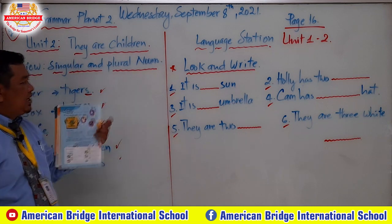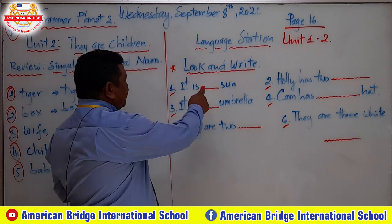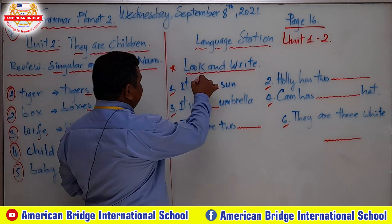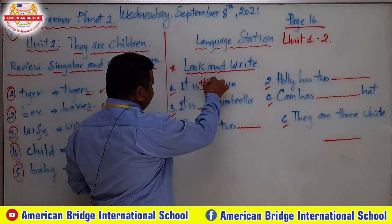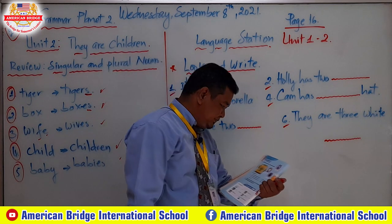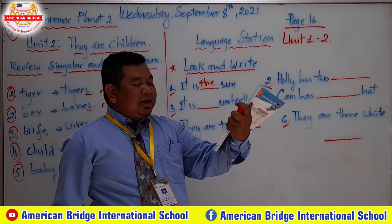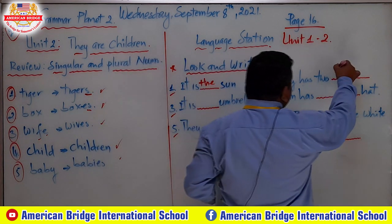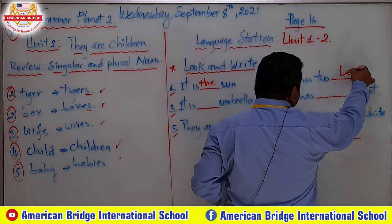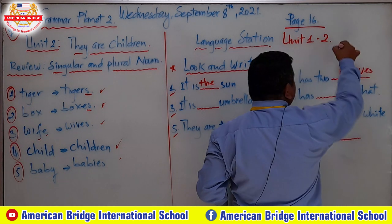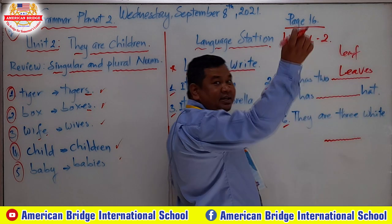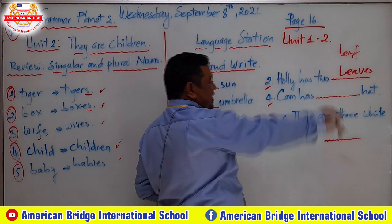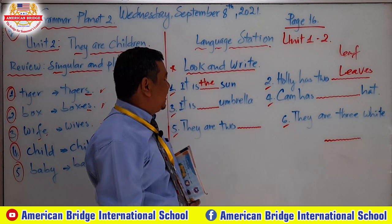Let's practice the exercise together. Number one: 'It is ___ sun.' The sun is only one thing, so you use 'the.' Answer: 'It is the sun.' Number two: 'Holly has ___.' Look at the picture — it shows leaves. The word is 'leaf,' and since it ends in -F, you delete it and add -VES, so it becomes 'leaves.' Answer: 'Holly has leaves.'